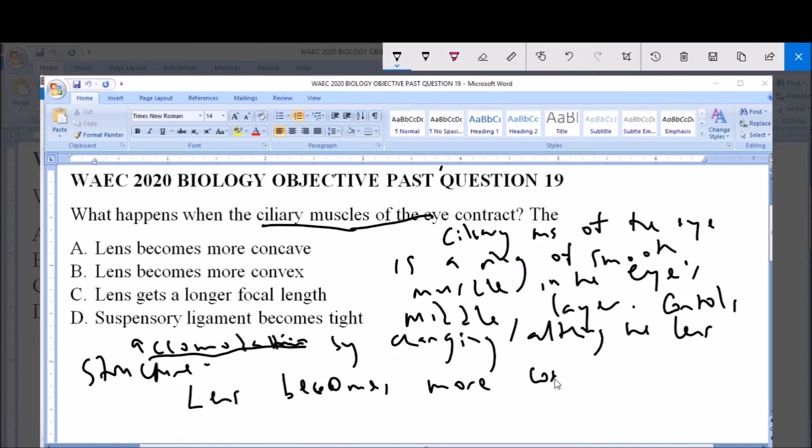And lens becomes more concave is option A, which is the correct answer to this question. Thank you and please subscribe to this channel for more videos and for more past questions and answers.